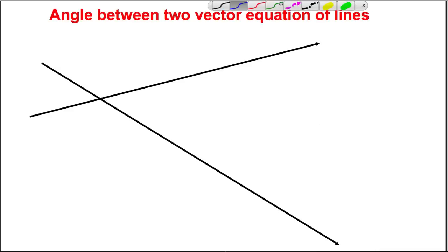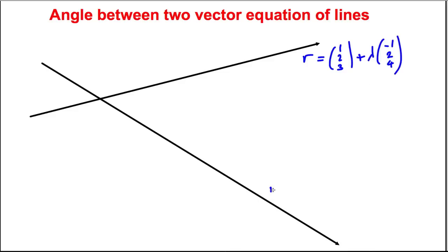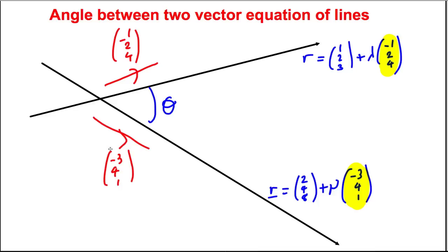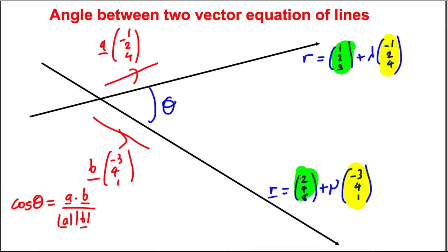For the angle between two vector equations of lines — say r = (1,2,3) + λ(−1, 2, 4) and r = (2,4,8) + μ(−3, 4, 1) — you only care about the direction vectors. Take a = (−1, 2, 4) and b = (−3, 4, 1), then use cos θ = (a · b) / (|a| |b|). You can completely ignore the position vectors — they have nothing to do with the angle.